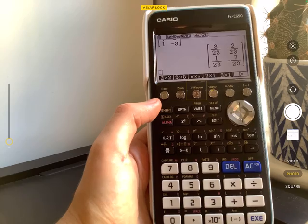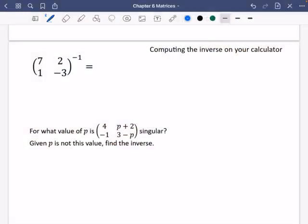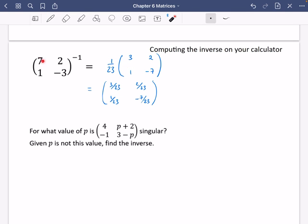So you get 3, 2, 1, and minus 7, all over 23. Or you could write it as 3/23, 2/23, 1/23, and -7/23. And you can see where that 23 has come from, because that's minus 21 minus 2, which gives you the minus 23. And all of that stuff's happened in here. We can see if there's been some switchings and things like that. So you can use the calculator to find inverses if it's numerical.